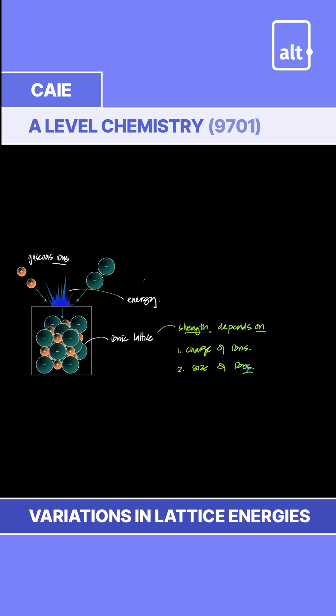One has a positive relationship, one has a negative relationship. Positive relationship means if one increases, the other increases. So if charge increases, lattice energy increases because attraction is greater. But if the size increases, lattice energy decreases.